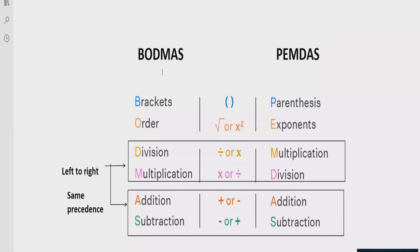B stands for Bracket and P stands for Parenthesis, which means that if your expression contains any bracket or parenthesis, you have to solve that part first. After the bracket, you have to look at the power of any number. If your expression contains a number with a power, you have to solve that part after the bracket.